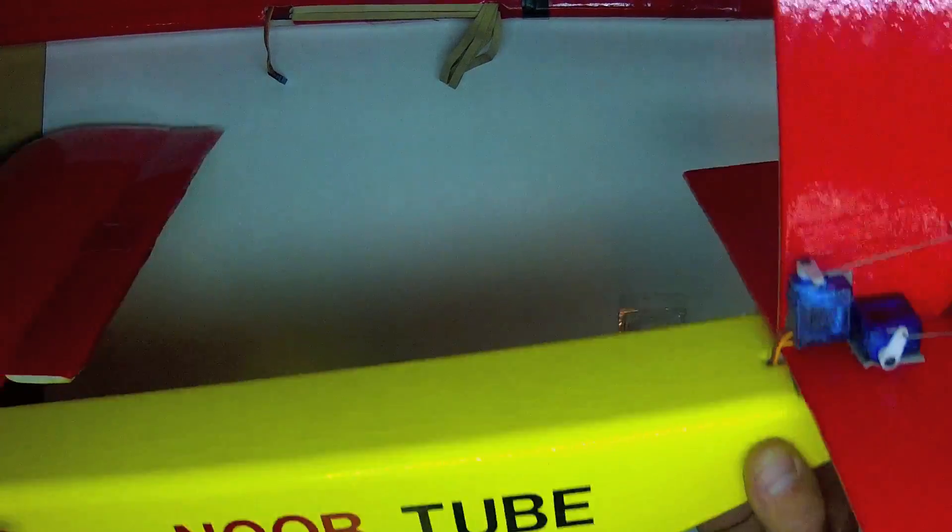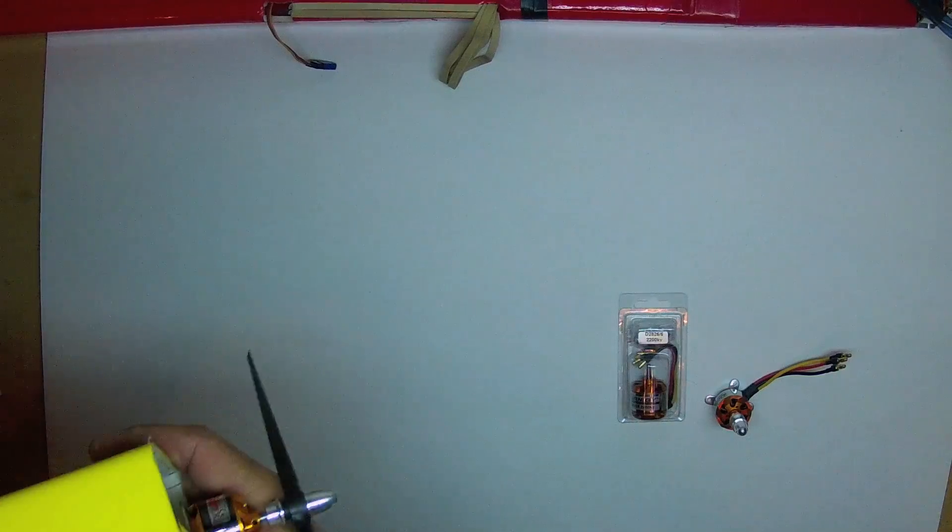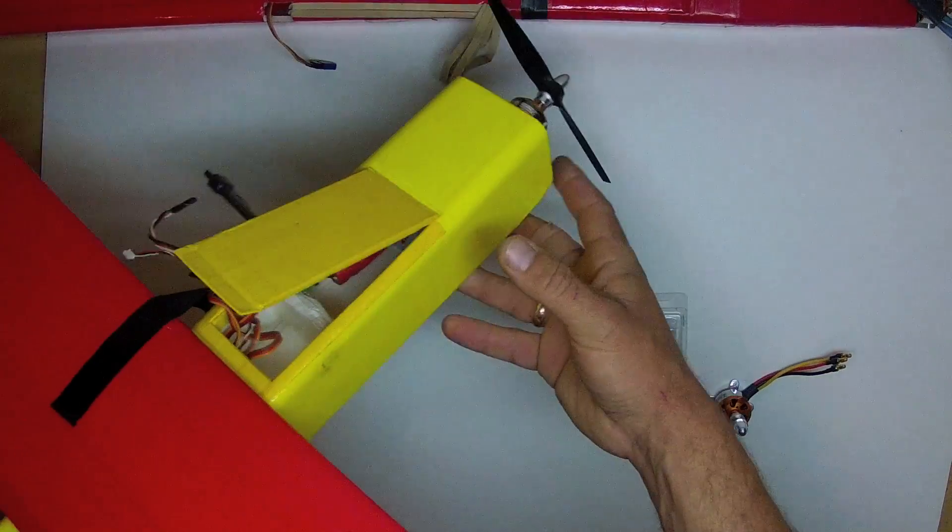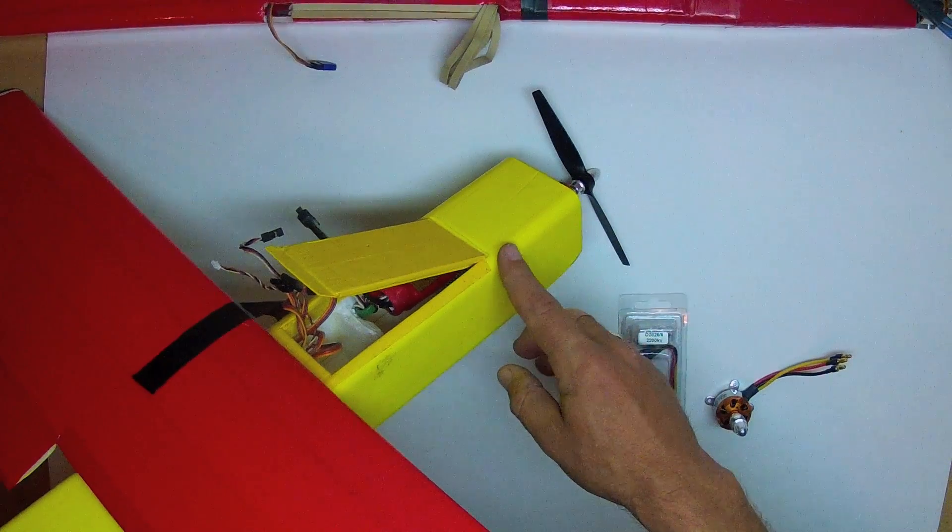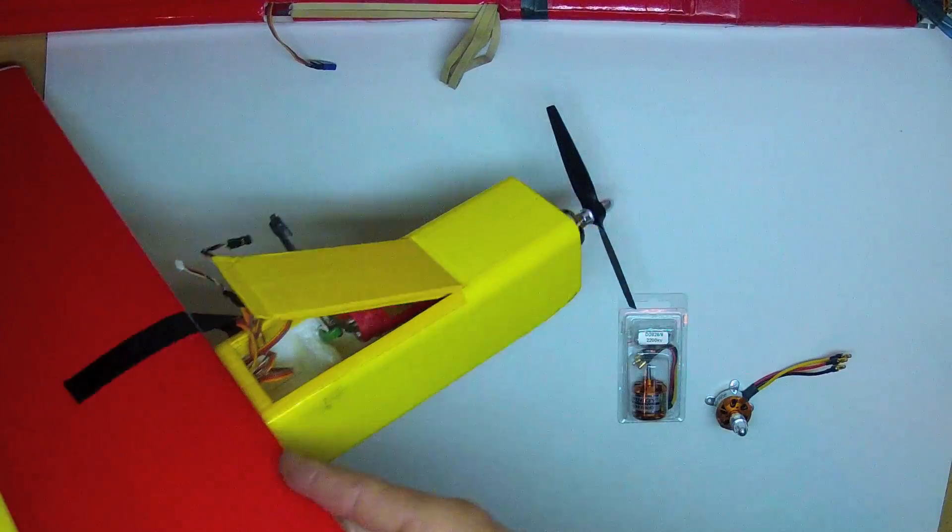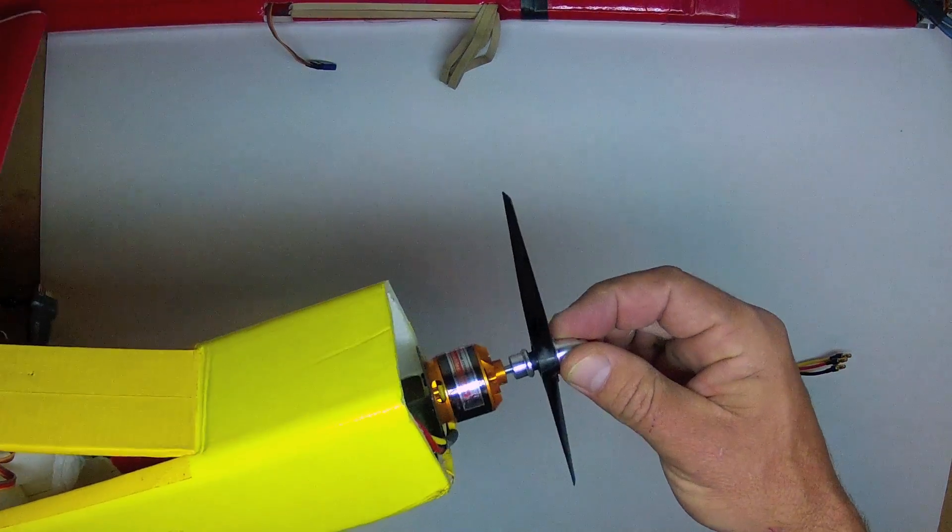And finally, there's the Noob Tube, which is an easy build, not quite as easy to fly. A plane that uses a single piece of fuselage tube and a single arm and wing. And this little motor does great and packs a punch.